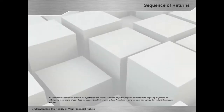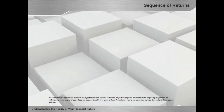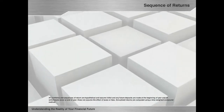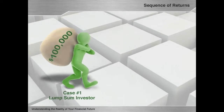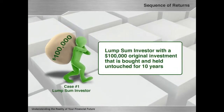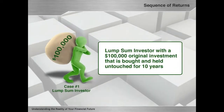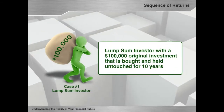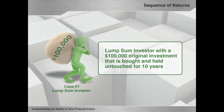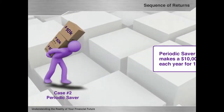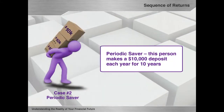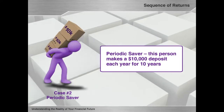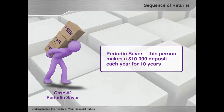To better understand sequence of returns and uncertainty, let's look at three scenarios. Case 1 is a lump-sum investor with a $100,000 original investment that is bought and held untouched for 10 years. Case 2 is a periodic saver — this person makes a $10,000 deposit each year for 10 years.